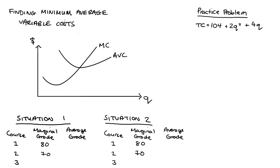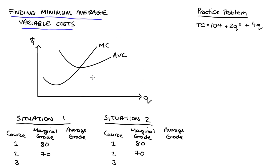Hi everyone. In this video, I'm going to be talking about finding the minimum of average variable costs. I'm going to split the video roughly into two. In the first part of the video, I'm going to describe the theory behind the result that I'll use.